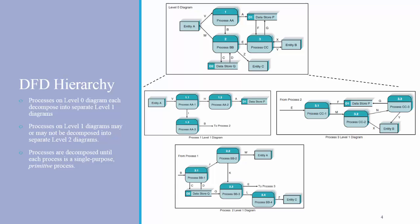Processes are decomposed until each process is a single purpose primitive process. In practice, it's common to see level 0 and level 1 diagrams, and while it's possible to have level 2, level 3, or even beyond, those are rare except in very complex systems.